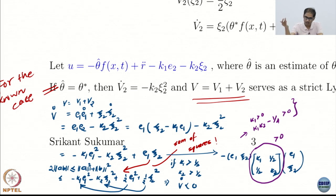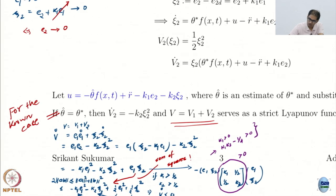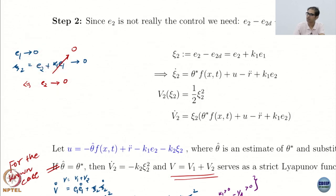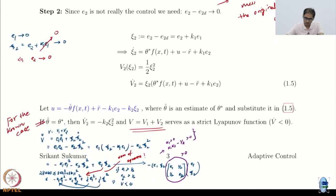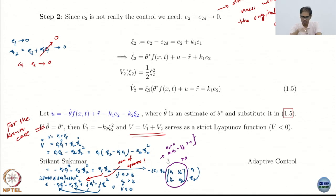Instead of equality, I move to an inequality — that is fine in Lyapunov analysis. I have minus K1 E1 squared minus K2 psi_2 squared plus the additional mixed term. I can always use K1 to dominate the one-half and K2 to dominate the one-half, and then V dot is negative definite. This is what the entire trick of Lyapunov analysis is all about. V dot being negative definite means both E1 and psi_2 go to zero. We have a strict Lyapunov function — V dot became strictly less than zero.